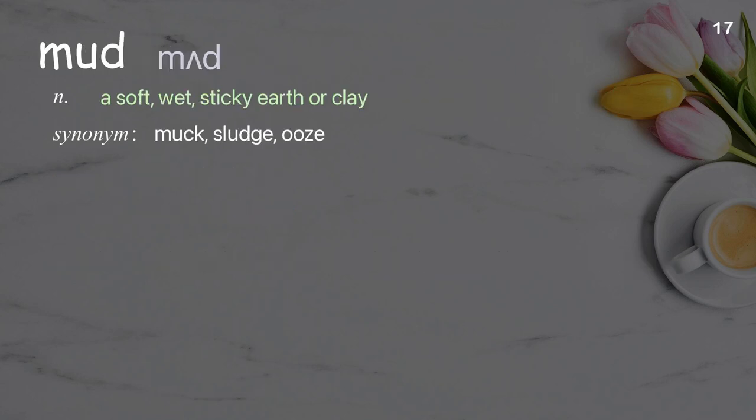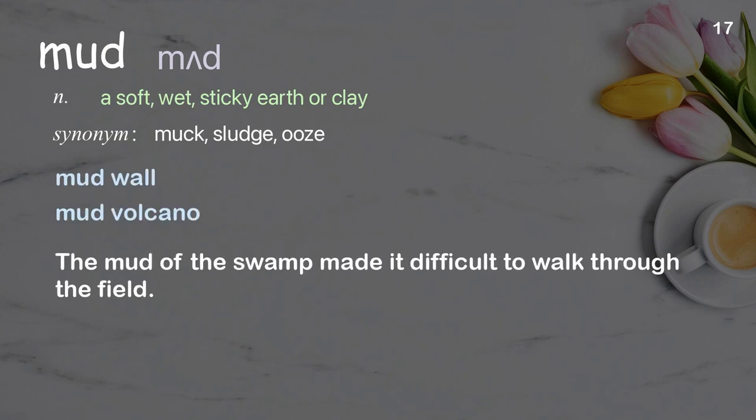Mud: A soft, wet, sticky earth or clay. Examples: Mud wall, mud volcano. The mud of the swamp made it difficult to walk through the field.